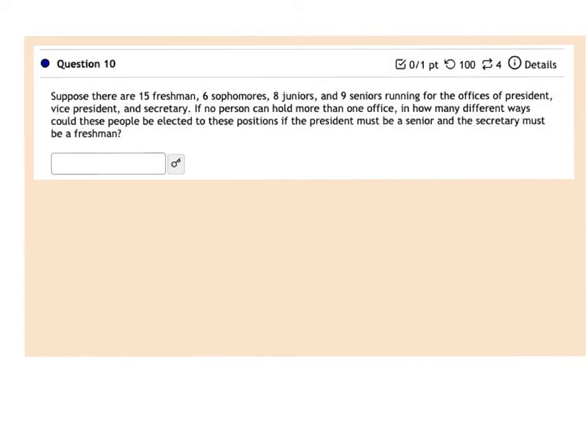If no person can hold more than one office, in how many different ways could these people be elected to positions if the president must be a senior and the secretary must be a freshman?